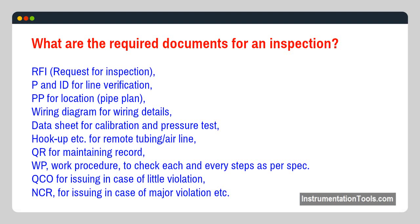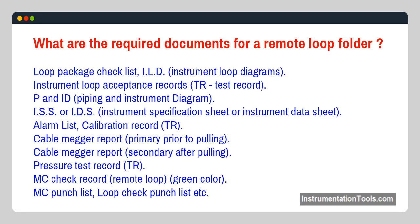What are the required documents for a remote loop folder? Loop package checklist, ILD (instrument loop diagrams), instrument loop acceptance records, TR (test record), P&ID (piping and instrument diagram), ISS or IDS (instrument specification sheet or instrument data sheet), alarm list, calibration record TR, cable mega report — primary (prior to pulling) — cable mega report — secondary (after pulling) — pressure test record TR, MC check record (remote loop, green color), MC punch list, loop check punch list, etc.